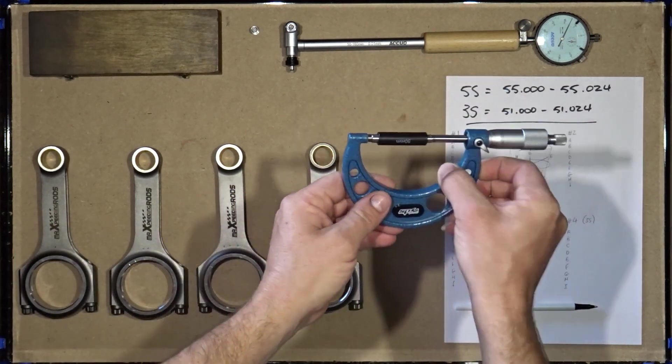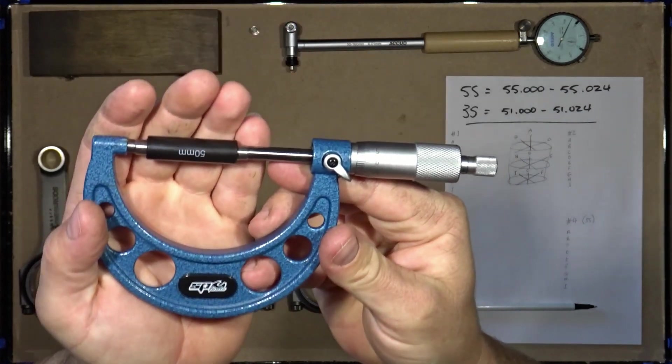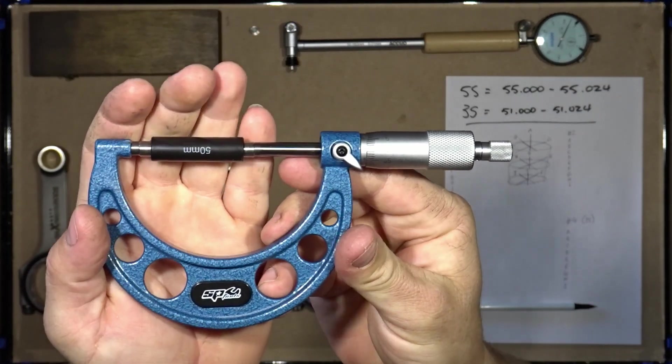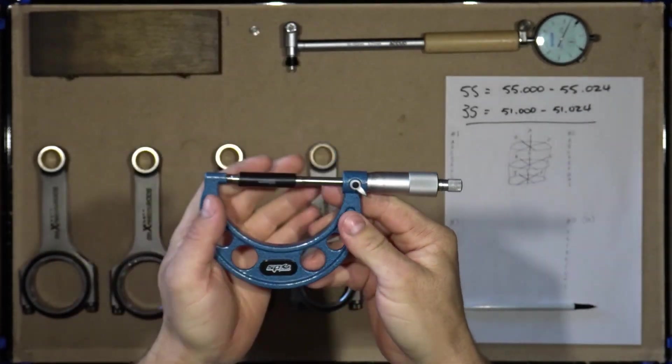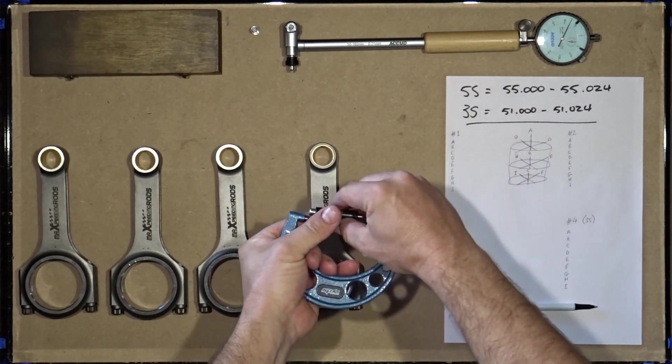Here I have my freshly adjusted micrometer that I'll be using to calibrate the dial bore gauge. It's important to always use freshly calibrated utensils to avoid errors in your measurements.